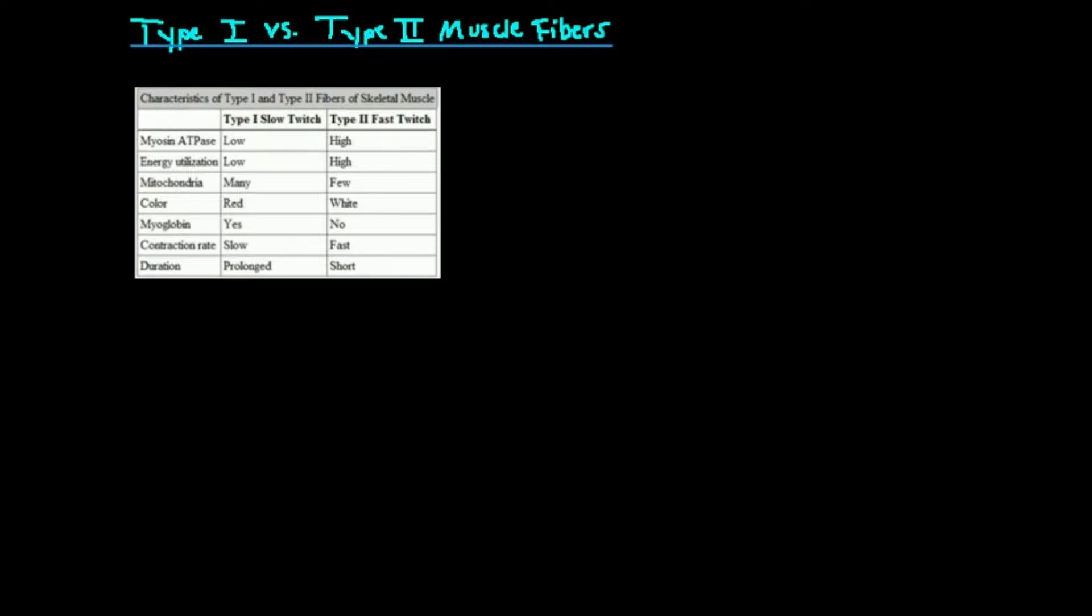Type 1 muscle fibers are smaller, and they don't produce as much force. They're more suited for things like long-distance running, something like that, rowing. Type 2 muscle fibers are larger. They're more adapted to lifting very heavy things, sprinting, more sports like MMA or something like that.